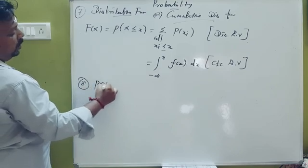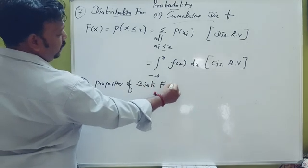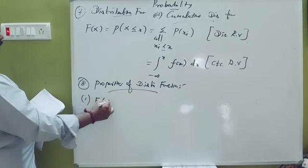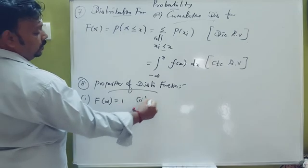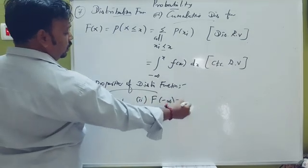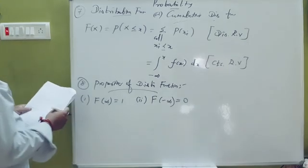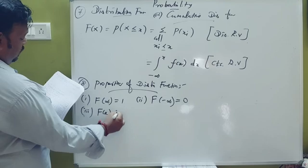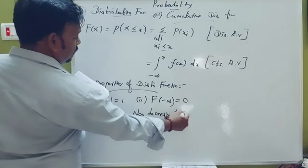Now we look at the properties of the distribution function. The first property: capital F of x at infinity equals one. The second property: capital F of x at minus infinity equals zero. The third property: F of x is a non-decreasing function.